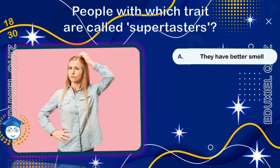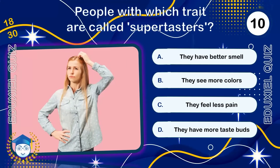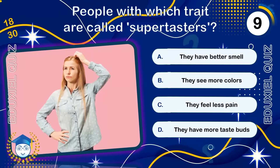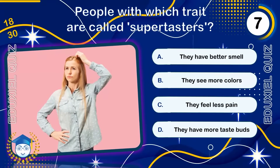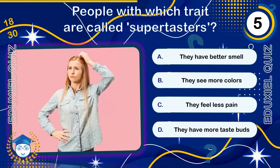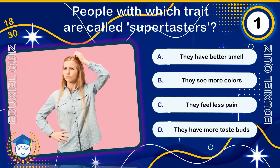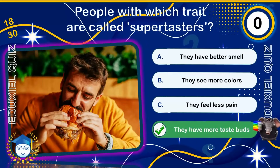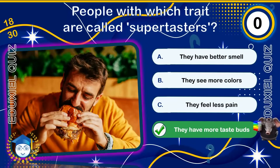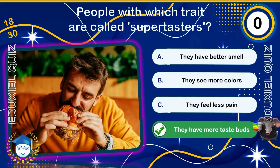People with which trait are called supertasters? So-called supertasters have up to twice as many taste buds as average — around 10,000 instead of 5,000. This makes them more sensitive to bitter flavors like coffee or kale. Interestingly, they may be less likely to smoke due to heightened taste sensitivity.